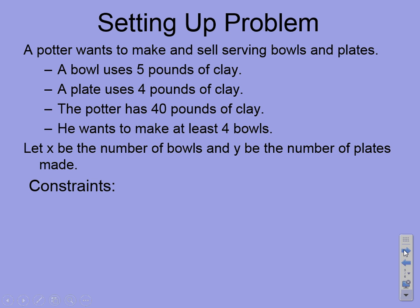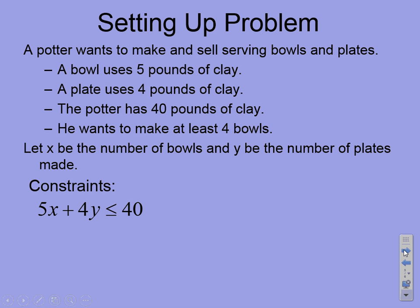He has to talk about his constraints because he doesn't know how many of each unless we talk about the limitations. One limitation is that a bowl uses five pounds of clay plus a plate uses four pounds of clay, but he only has 40 pounds of clay. So when he writes his constraints, he's going to use inequalities: 5X plus 4Y is less than or equal to 40. That's a limitation — we can't use more than 40 pounds of clay.